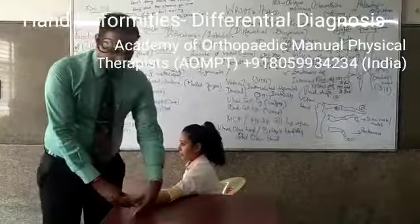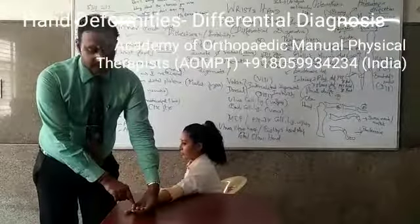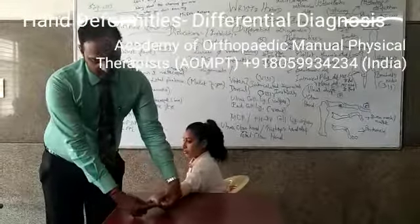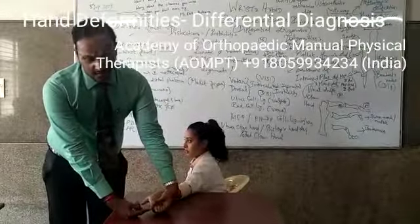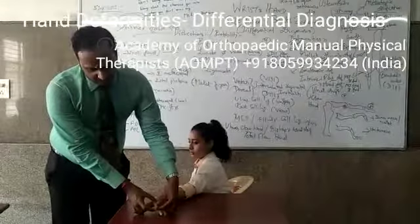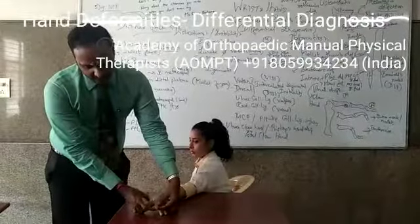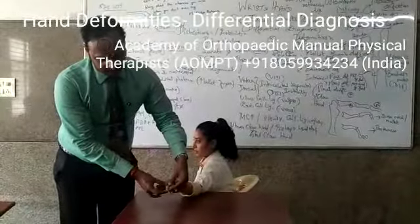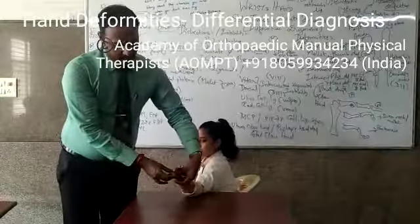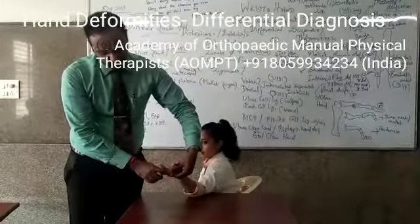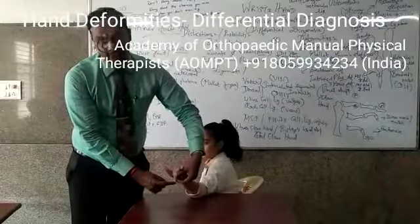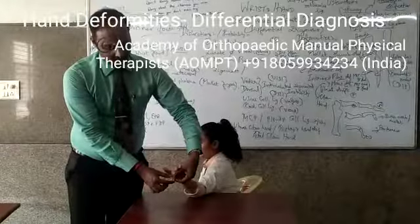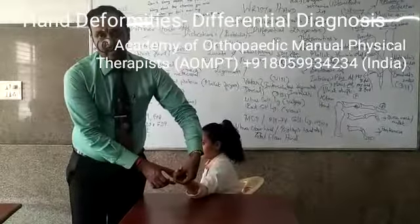A similar situation occurs in the other fingers. If extensor digitorum goes for a rupture, the distal phalanx goes into flexion. Over a period of time, the proximal interphalangeal joint goes into extension, and the metacarpophalangeal joint also goes into flexion. So you have MCP flexion, PIP extension, and DIP flexion. Mallet finger starts from the distal interphalangeal joint and then progresses to the proximal interphalangeal and then the metacarpophalangeal.